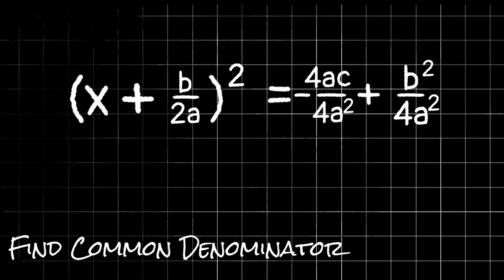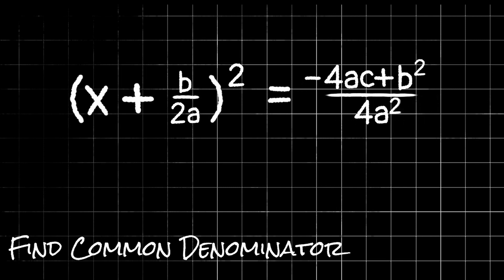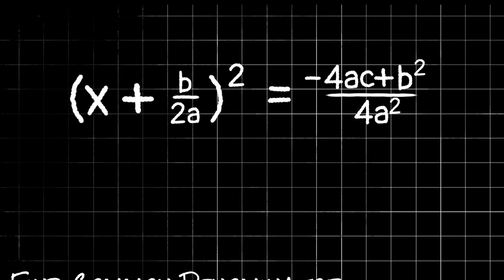So we would have negative 4ac plus b squared over 4a squared. But just to make it look a little bit neater, I'm going to flip the two terms in the numerator. Since addition is commutative, we can change the order to b squared plus negative 4ac or in other words, b squared minus 4ac. This might be starting to look a little bit familiar, but we still have a couple more steps to go.